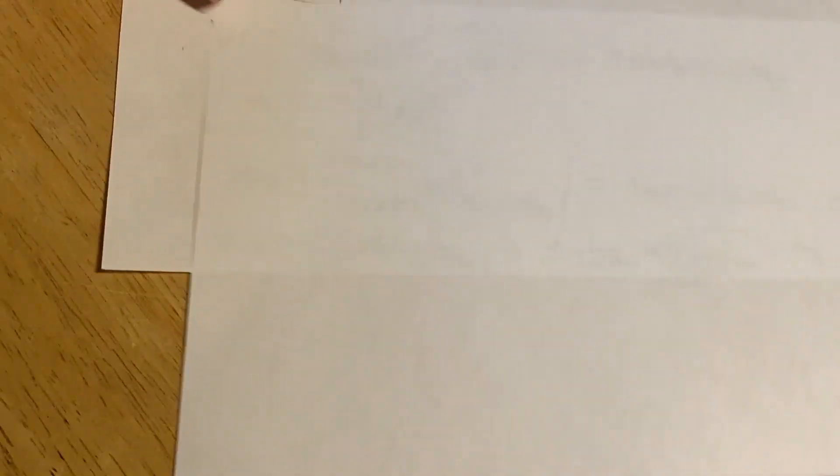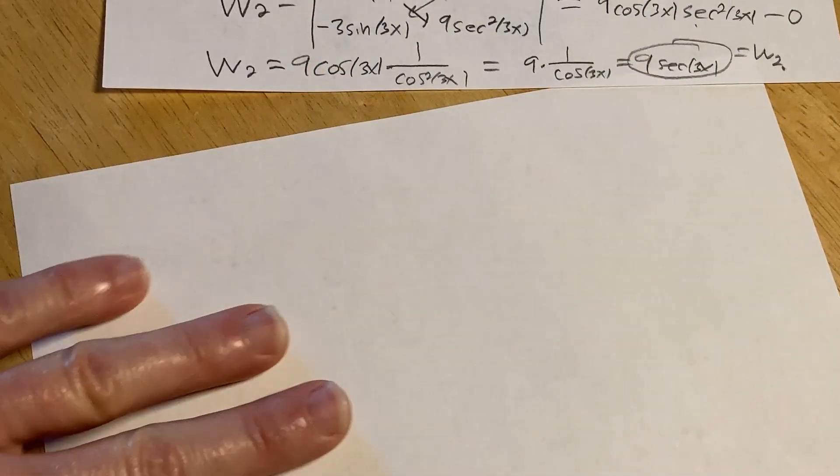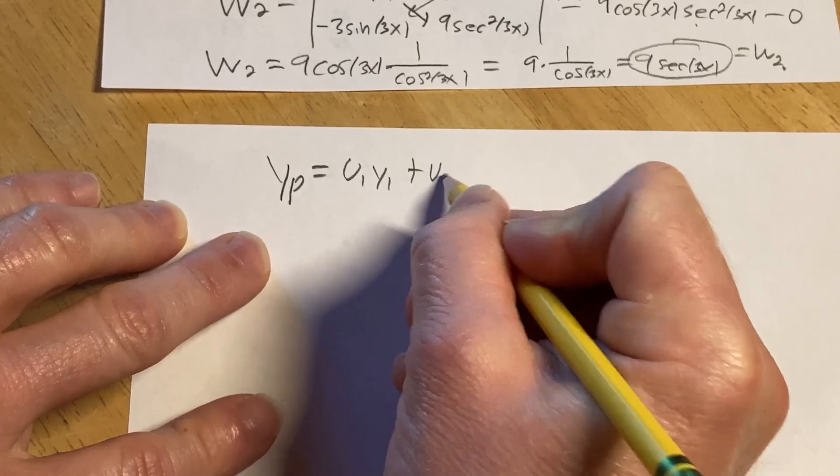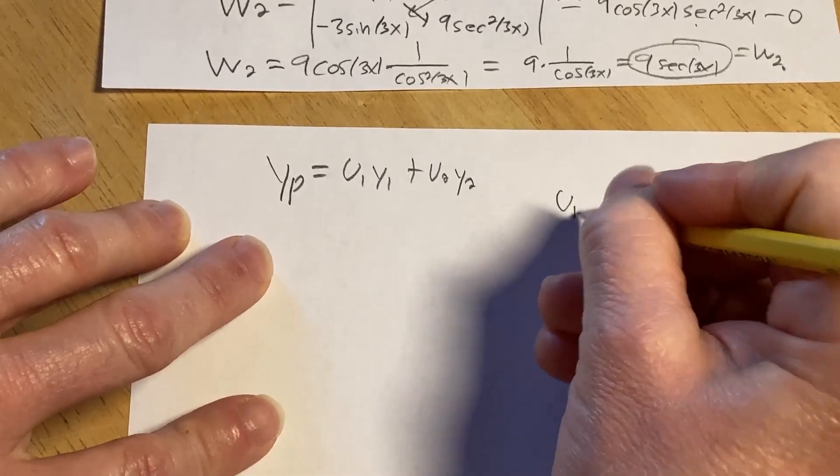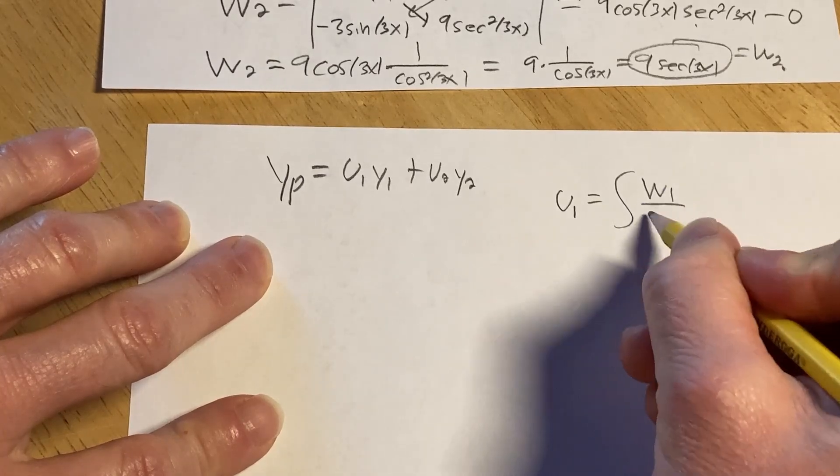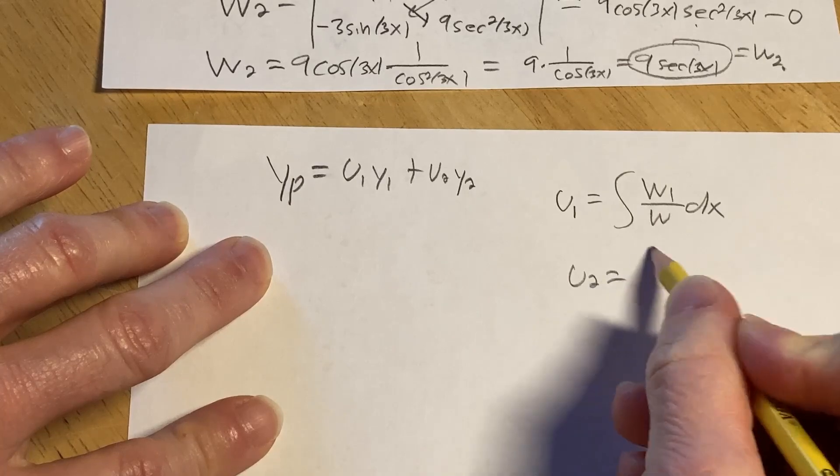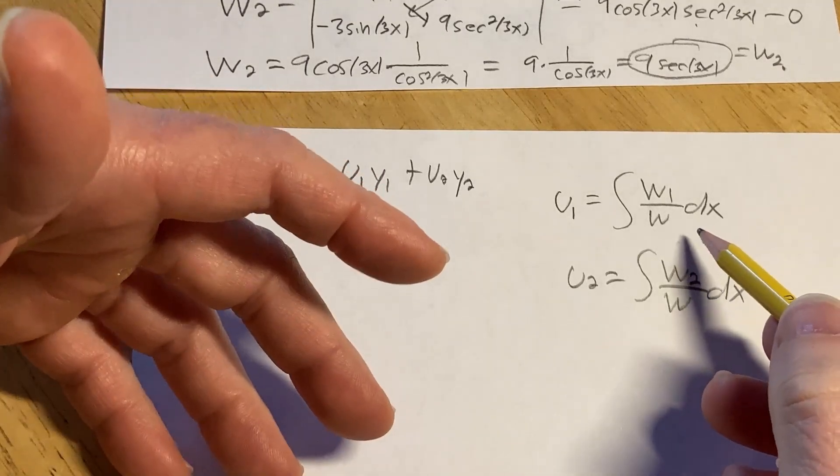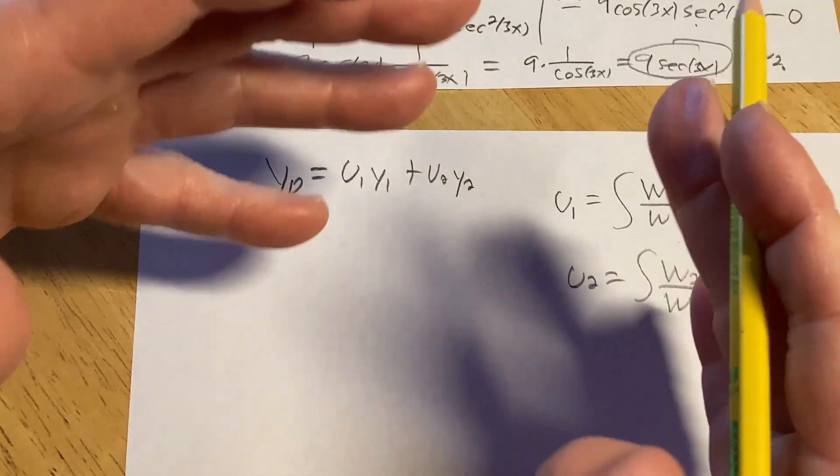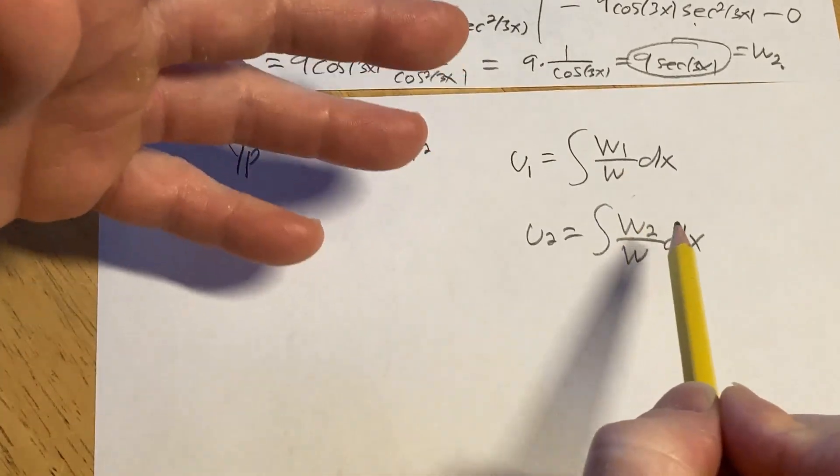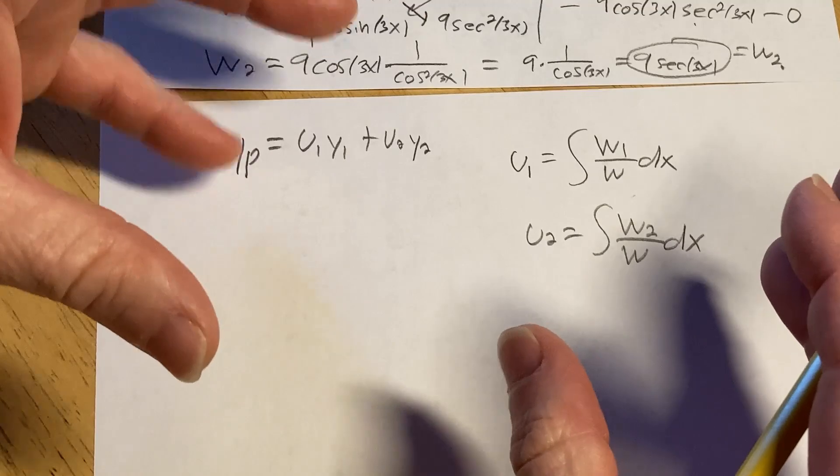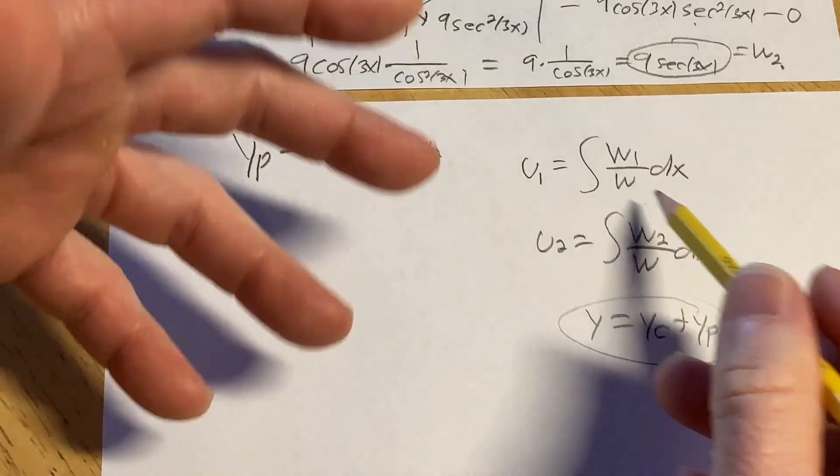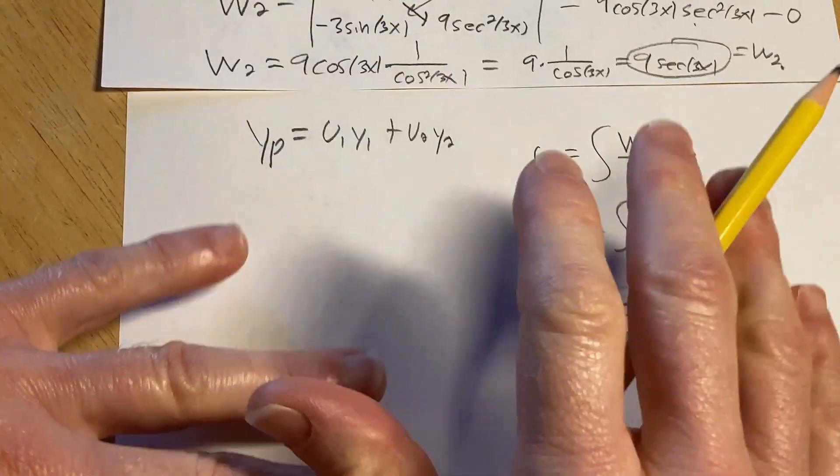Okay, now we need to compute the u's. So the u's are going to help us find yp. So basically, y sub p is going to be u1 y1 plus u2 y2. I told you it was messy. So u sub 1 is the integral of w1 over w dx. And then u sub 2 is the integral of w2 over w dx. So as long as you can integrate these, you can solve the problem. That's really the roadblock to these problems. If you can't integrate these, then you're just going to get a really weird answer with some integral in it.